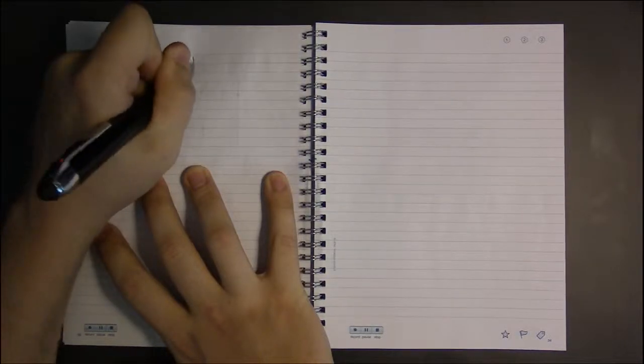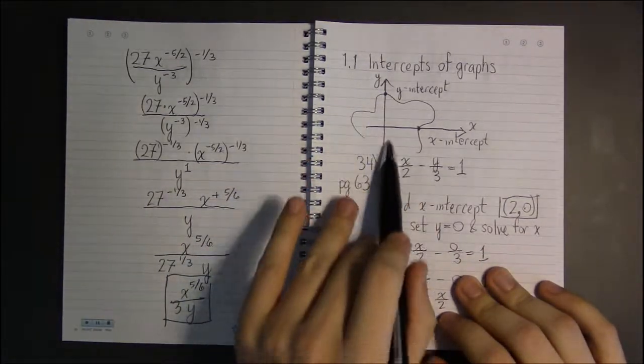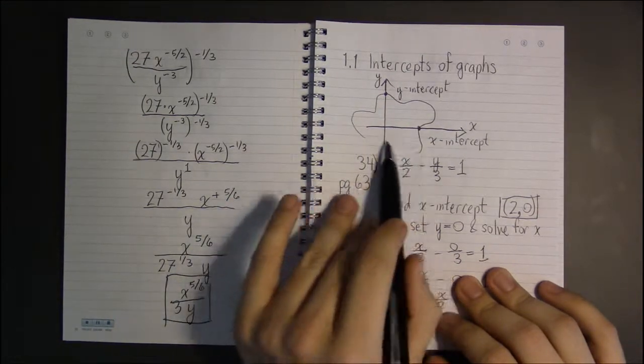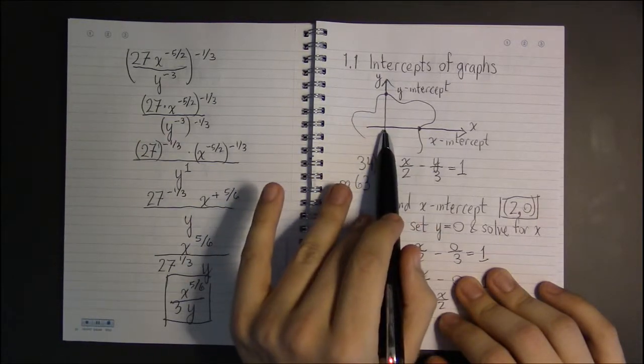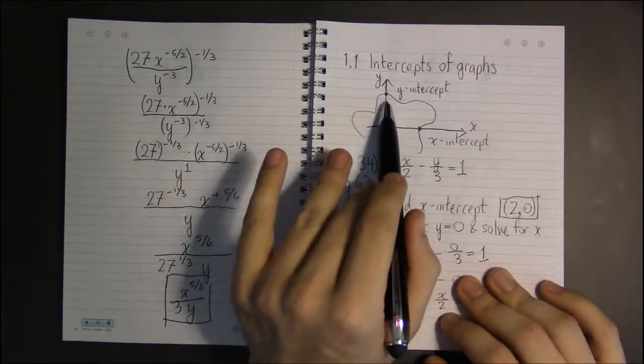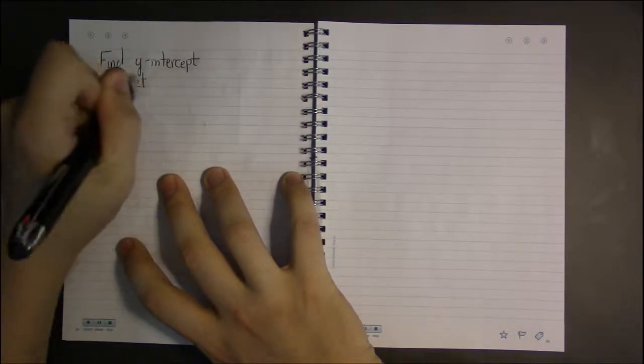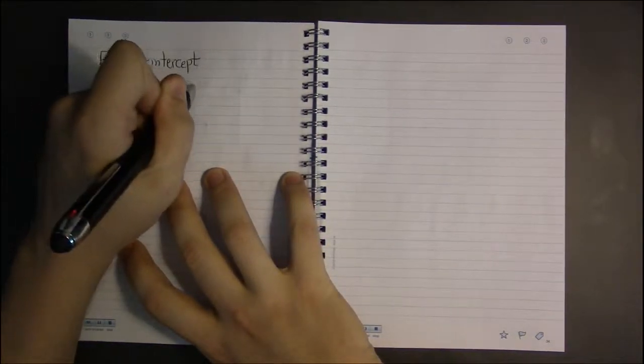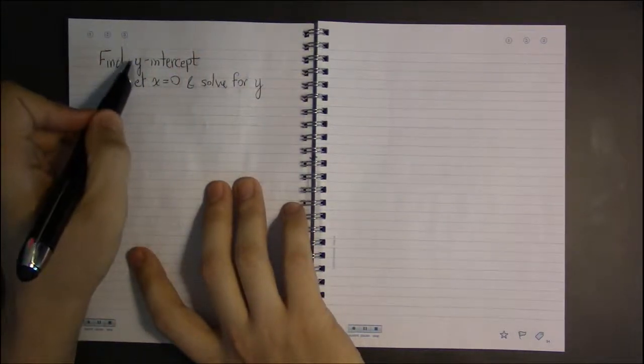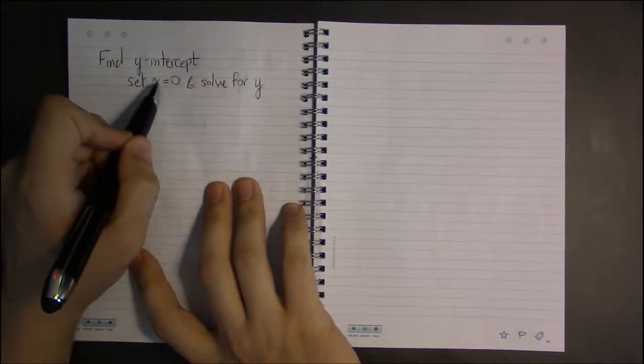And just like with x-intercepts, what's special about y-intercepts is that you just move up or down to get to a y-intercept; you never have to move left or right. So your x-coordinate, which tells you how far left or right you have to go, is just going to be 0. So with the y-intercept, you set x equal to 0 and solve for y. So for the x-intercept, you set y equal to 0. For the y-intercept, you set x equal to 0. To find an intercept, you set the opposite variable equal to 0.